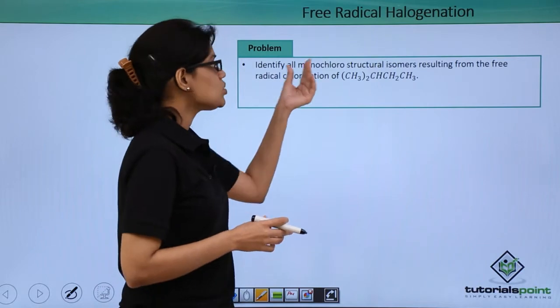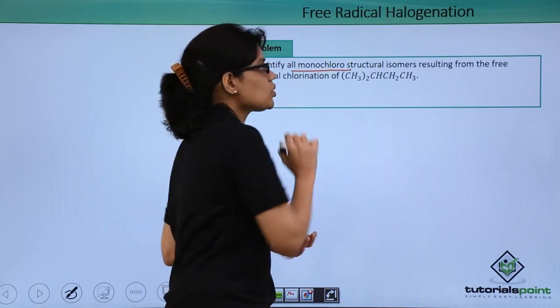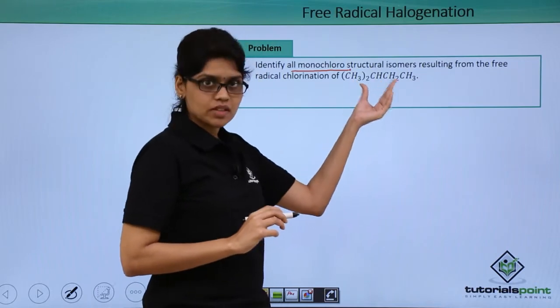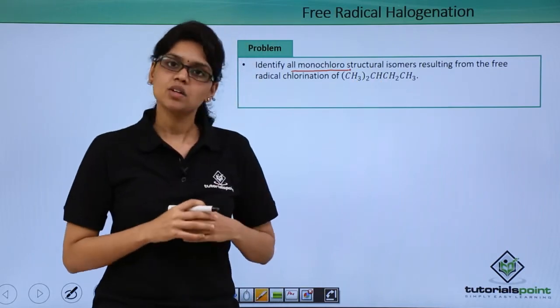In this question we have been asked to identify all monochloro structural isomers obtained when this particular structure is subjected to free radical chlorination.